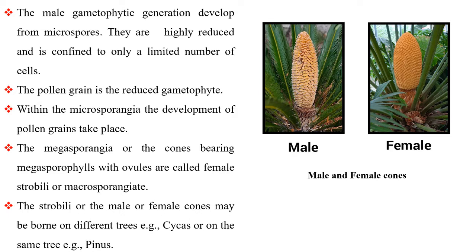Within the microsporangia, the development of pollen grains takes place. The megasporangia or the cones bearing megasporophylls with ovules are called female strobili or macrosporangiate. The strobili or the male or female cones may be borne on different trees, for example cycas, or on the same tree, for example pinus.